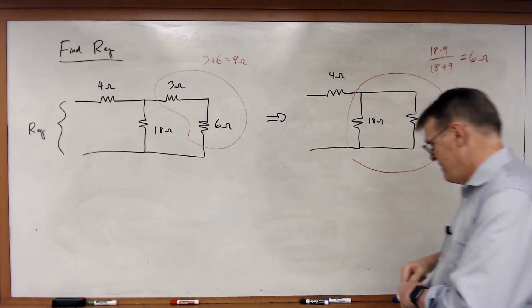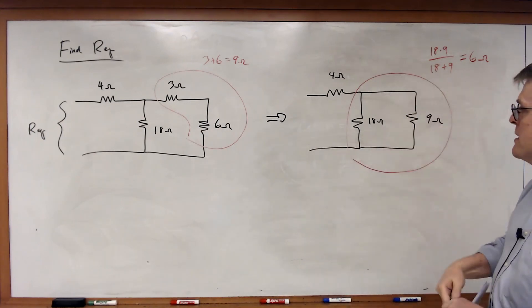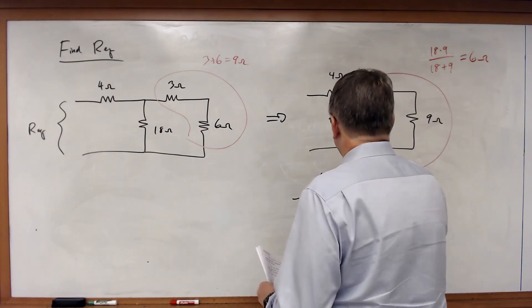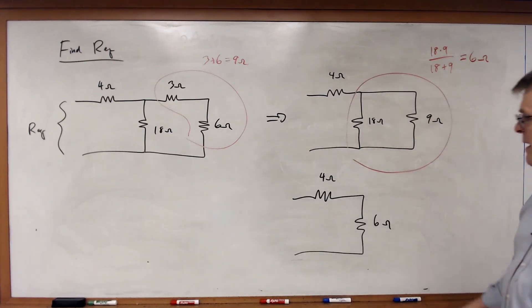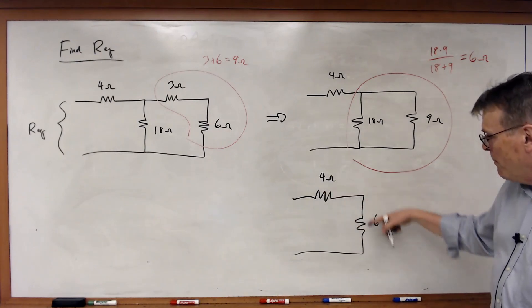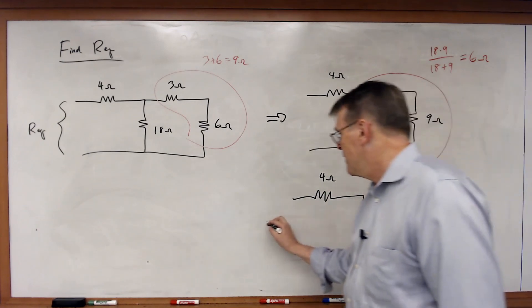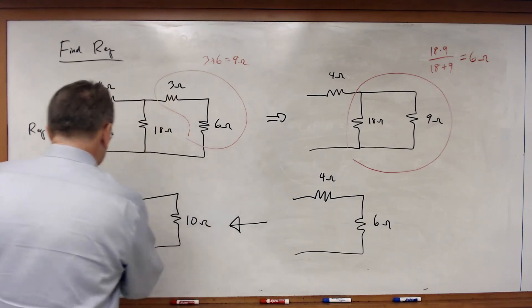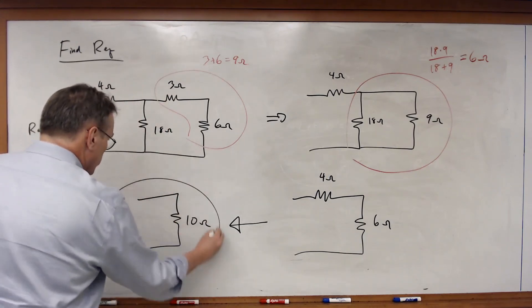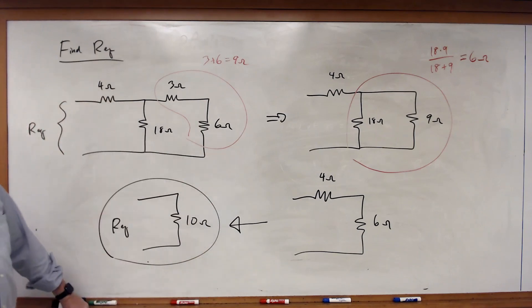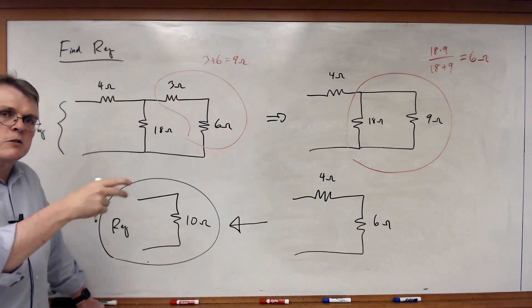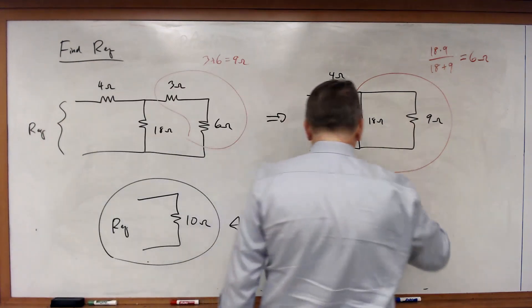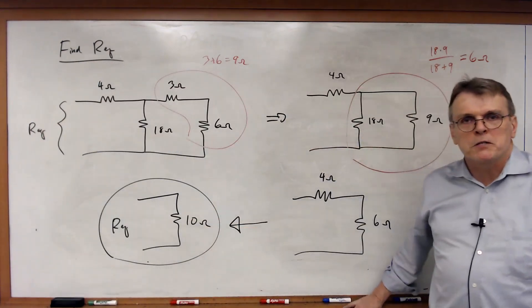After the redraw, we have 4 ohms and 6 ohms, and those are clearly in series. Combining them: 4 plus 6 equals 10 ohms. That gives us a single 10-ohm equivalent resistor. Whenever you see a network of resistors like this, find a series or parallel pair to start with and keep combining step by step until you reach one equivalent resistor.